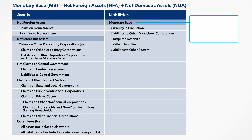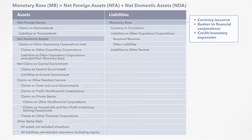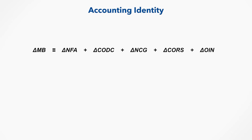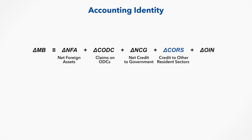On the liability side, the monetary base shows the Central Bank's function as issuer of currency and banker to financial corporations, in particular to banks. It is also a key variable to analyze the process of monetary expansion and how changes in net foreign assets and net domestic assets ultimately affect credit and broad money. The CBS allows monetary policy to be presented and analyzed by the different financial instruments, as rearranged in the analytical survey. The basic accounting identity shows that the net change on the right-hand side resulting from changes in net foreign assets, claims on other depository corporations, net claims on central government, or credit to other resident sectors, and or other items net will necessarily reflect a change in the monetary base.